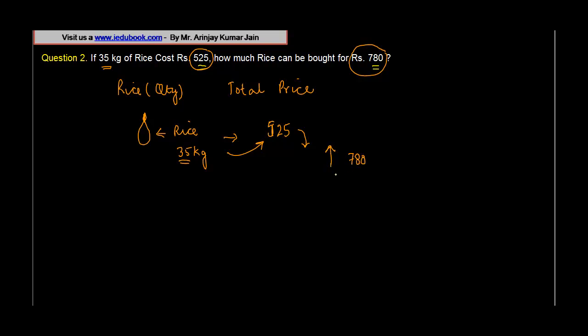The question is how much rice can be bought with this particular amount of money. Let's solve this question. How do we solve it? We solve it using the unitary method that we had used in the previous video. What does the unitary method say? The unitary method says find out how much